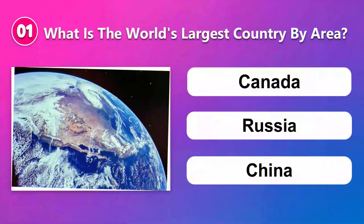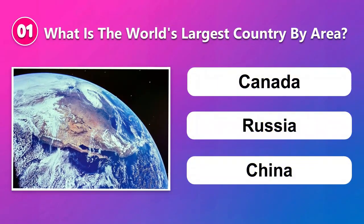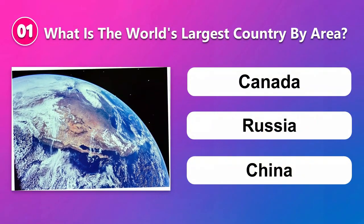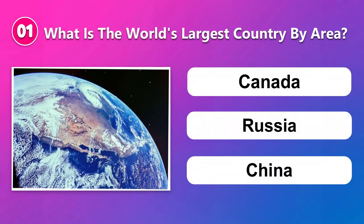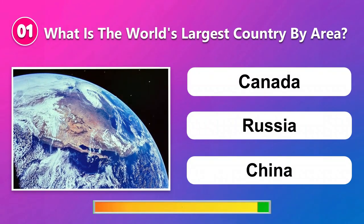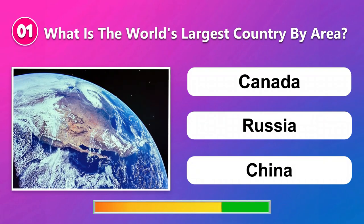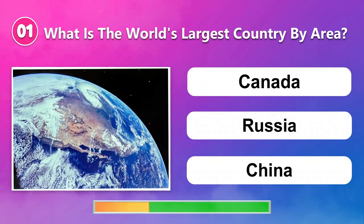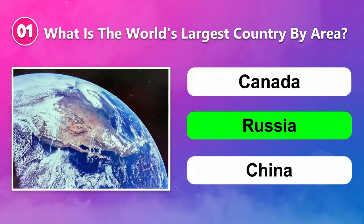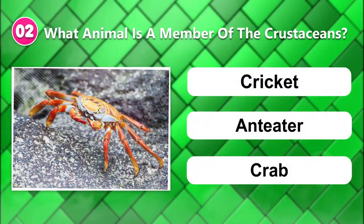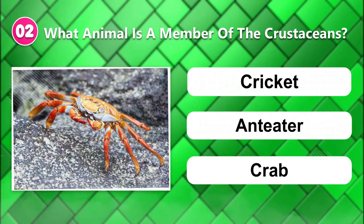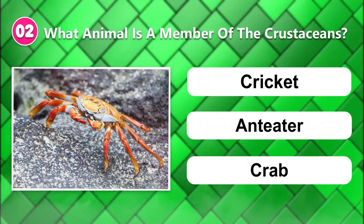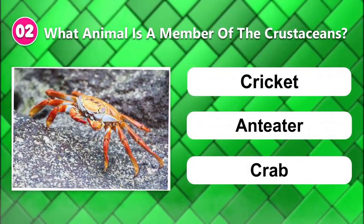Number one: What is the world's largest country by area? Canada, Russia, or China. Number two: What animal is a member of the crustaceans? Cricket, anteater, or crab.